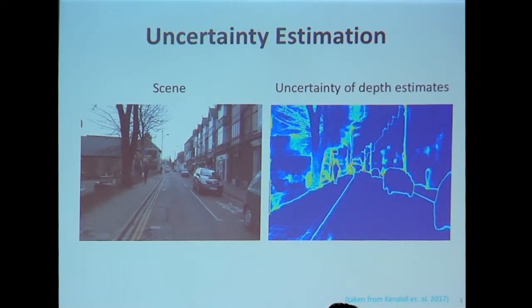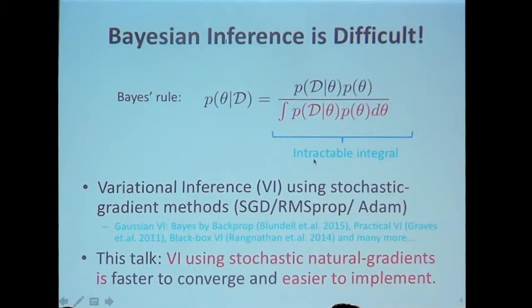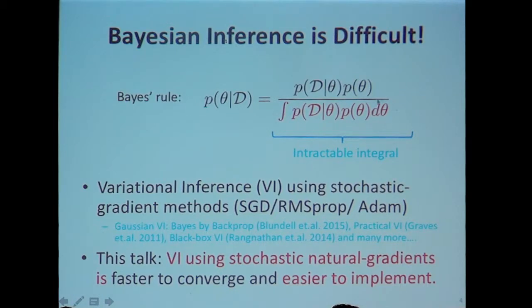If you have some estimate of this type of uncertainty, maybe you can make your self-driving car a little bit safer. That's the hope with Bayesian methods. The problem is that when you define a Bayesian model and compute the posterior distribution, the normalizing constant is usually intractable. You have to average over a large number of parameters — if theta has one million dimensions, this is a really big integral.